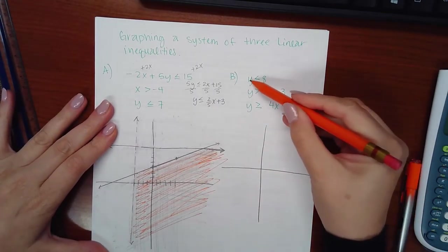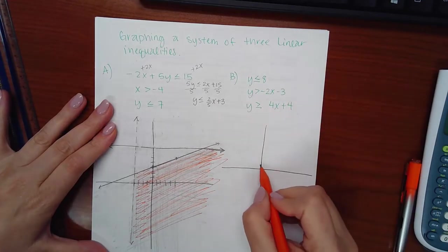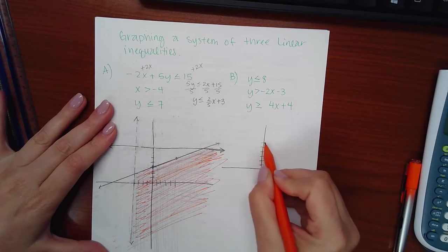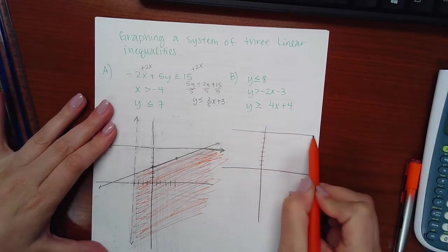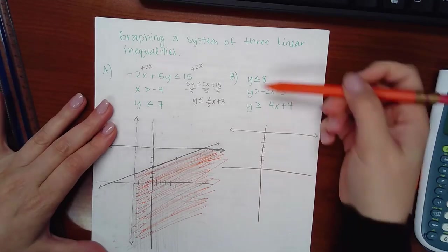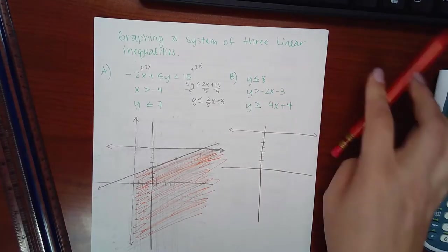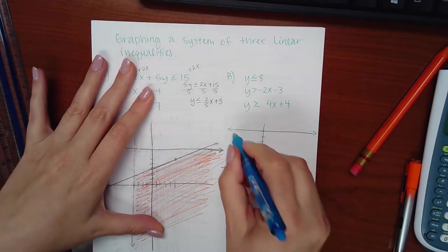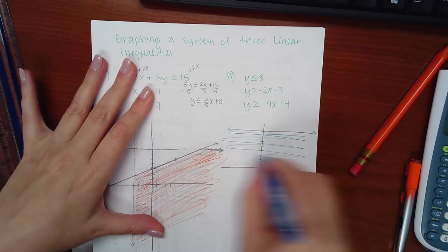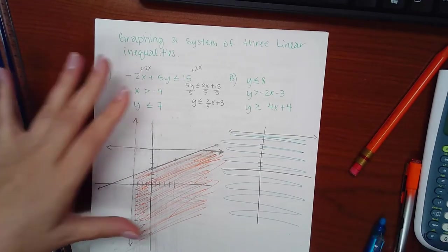So here I have y has to be less than or equal to 8. That means a horizontal line, 1, 2, 3, 4, 5, 6, 7, 8. And it's a solid horizontal line. And I'm going to be shading everything less than that line. So I'm going to be shading everything below that line.